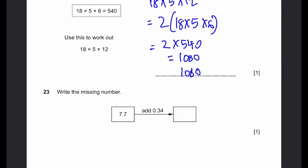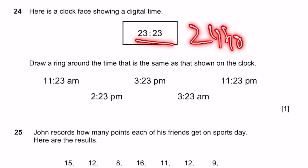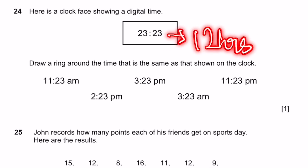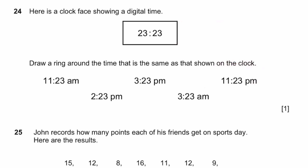Question 23. Write in the missing number: 7.7 add 0.34 — we get 8.04. Here's a clock face showing digital time 23:23. This is in 24-hour format. When you convert to 12-hour time, it becomes 11:23 p.m. That's why this is the answer.